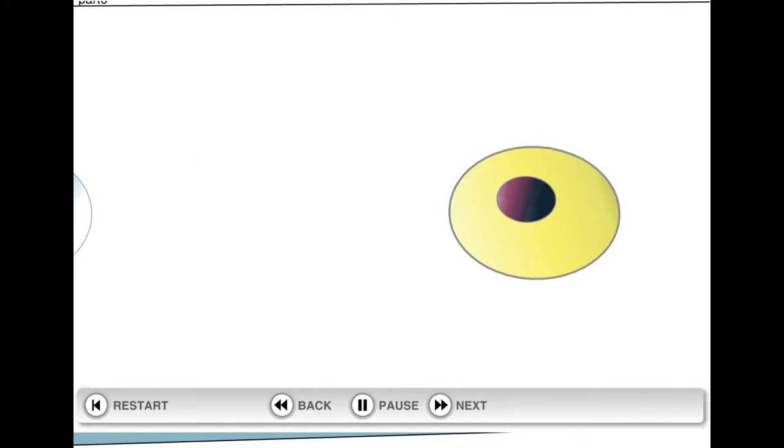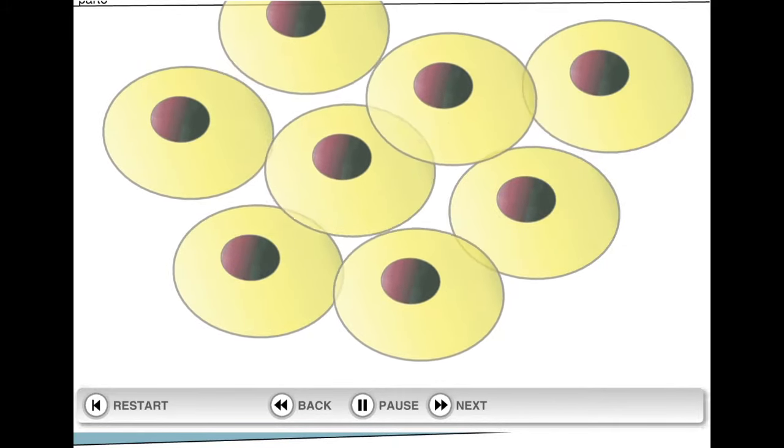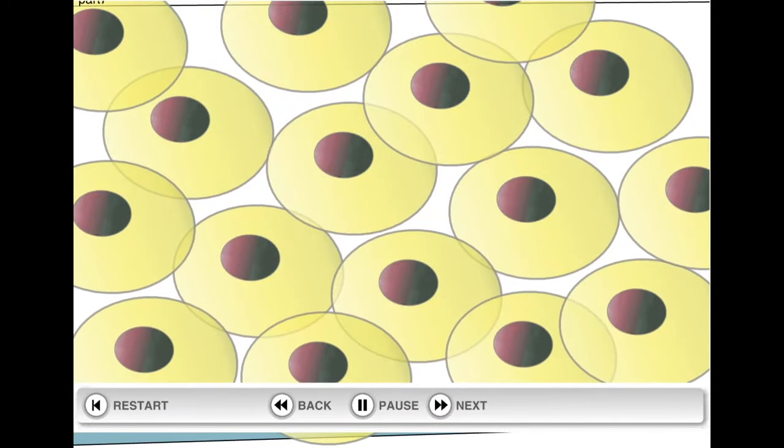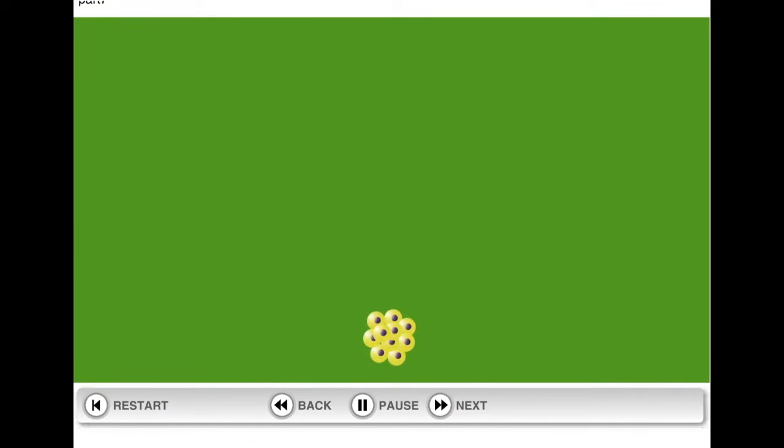Once fusion had taken place, chemical factors in the egg are released to stimulate cell division. Once the cells had multiplied sufficiently to form the makings of an embryo,